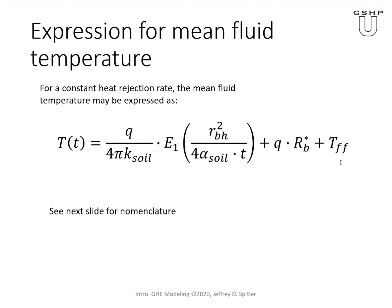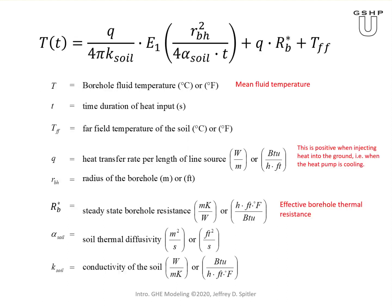Finally, the far field temperature — what I often call the UGT, undisturbed ground temperature — is needed to give us the actual temperature of the borehole wall rather than just the temperature rise. The borehole fluid temperature here is the mean fluid temperature, specifically the simple mean of the entering and exiting temperatures. That's because we're using RB* here; if we just used RB, we'd get the actual mean fluid temperature and would then have to work out the entering and exiting temperatures from there.